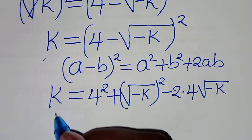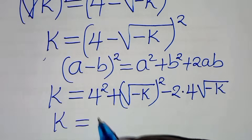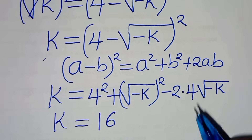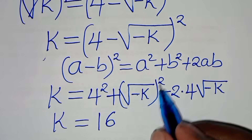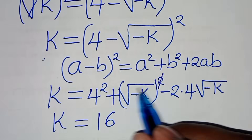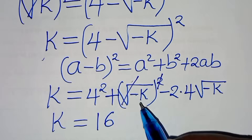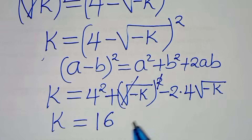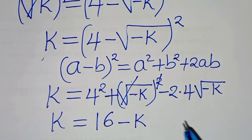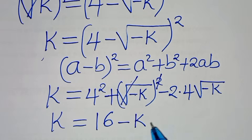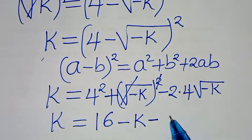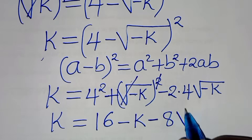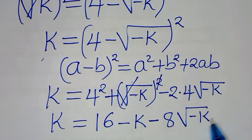So we have k is equal to 4 squared, this is equal to 16; now square root of minus k raised to the power of 2, we eliminate the square root sign, so that we have plus times minus k, this is minus k; then subtract 2 times 4, this is 8, times square root of minus k.